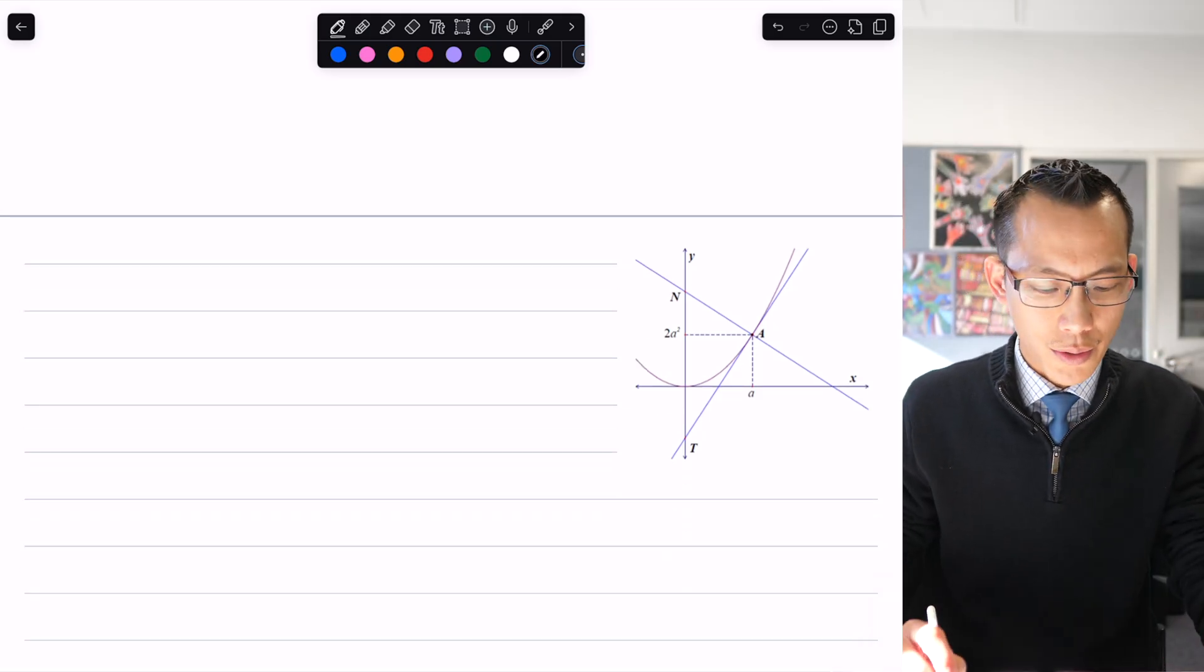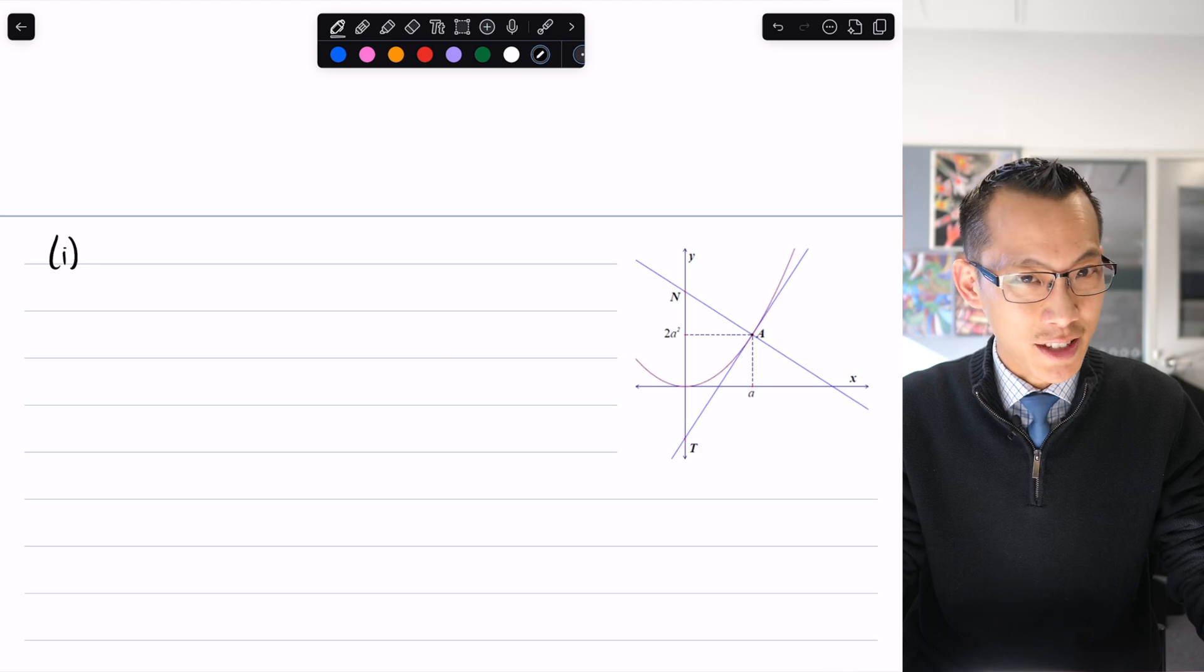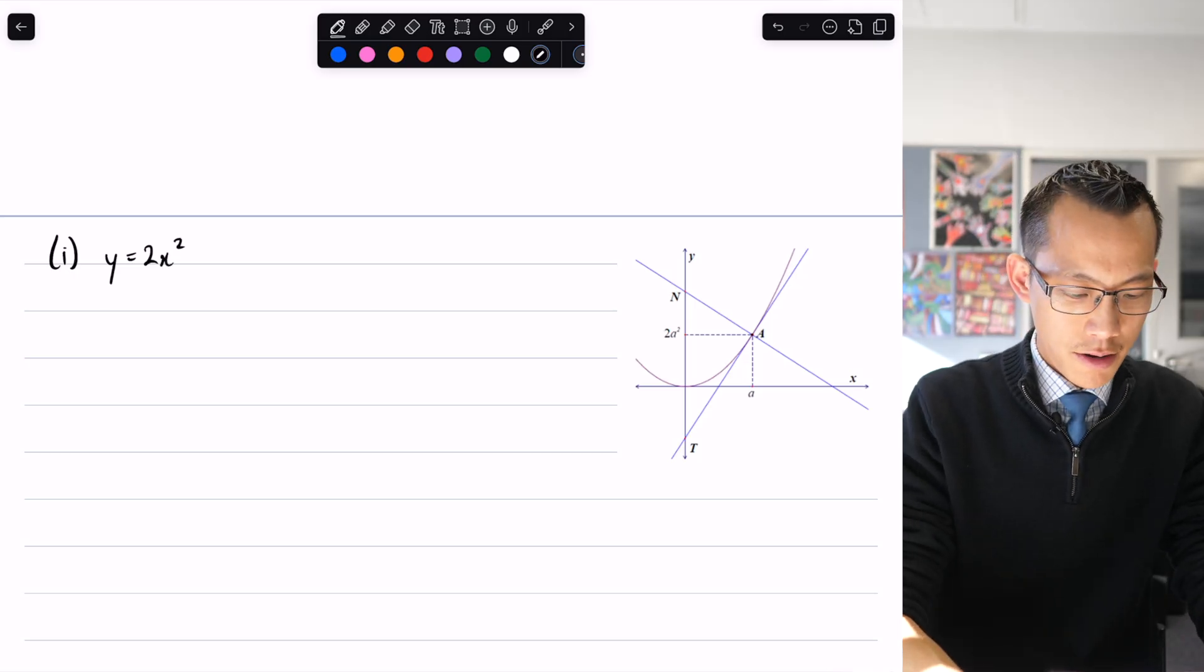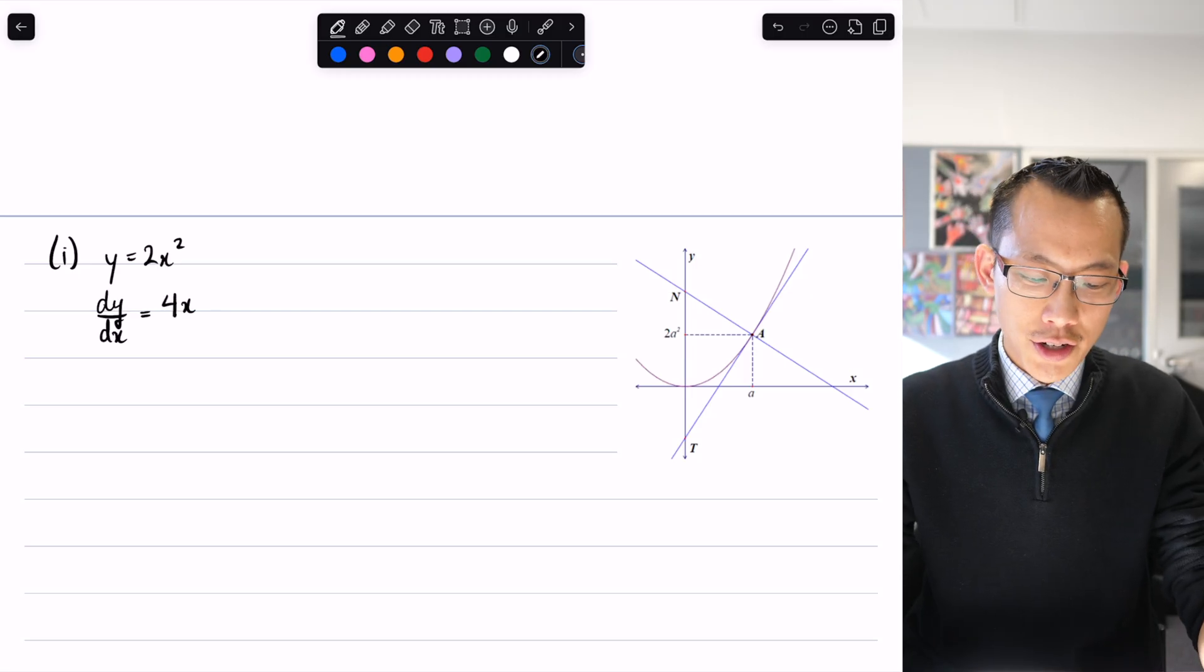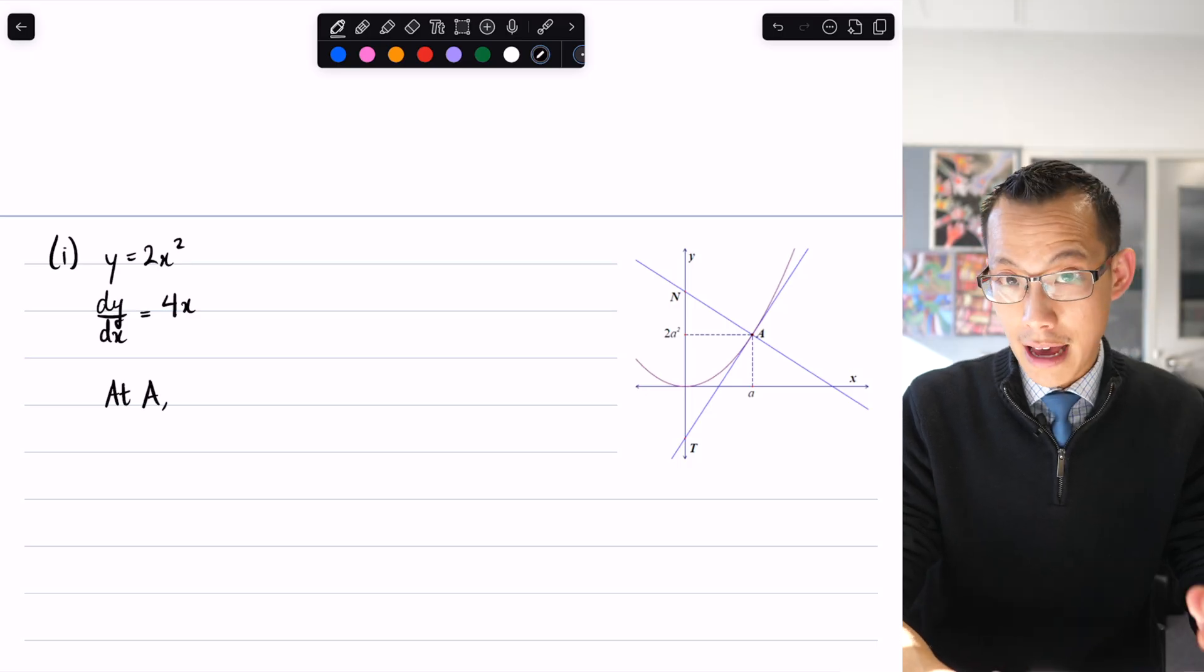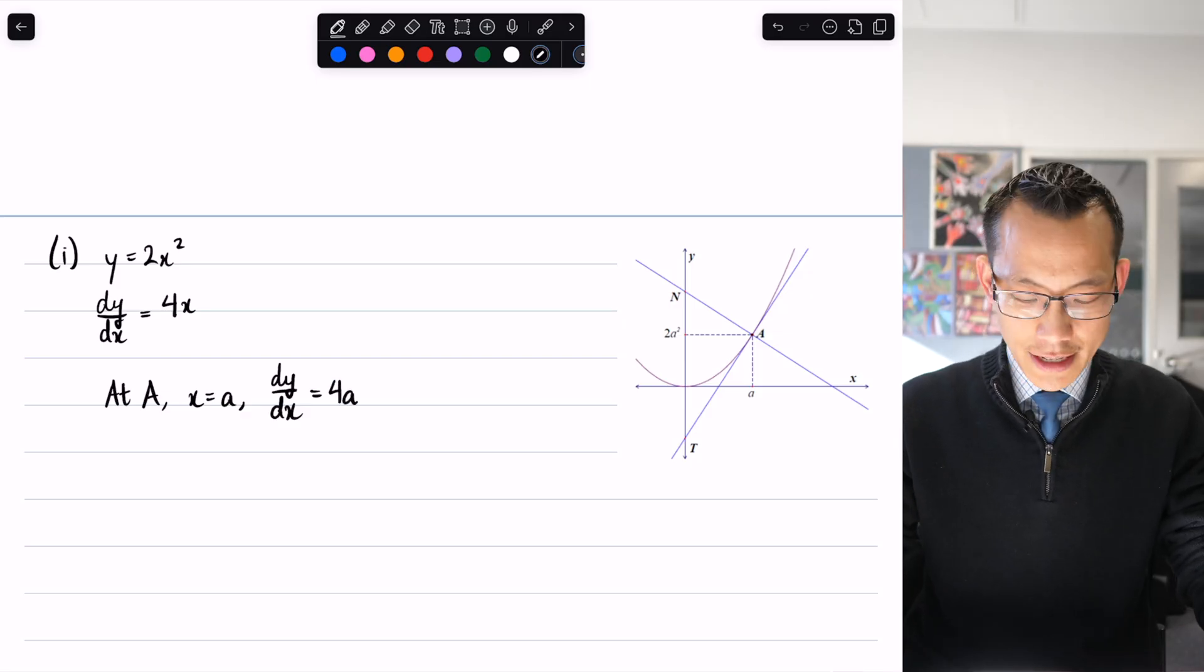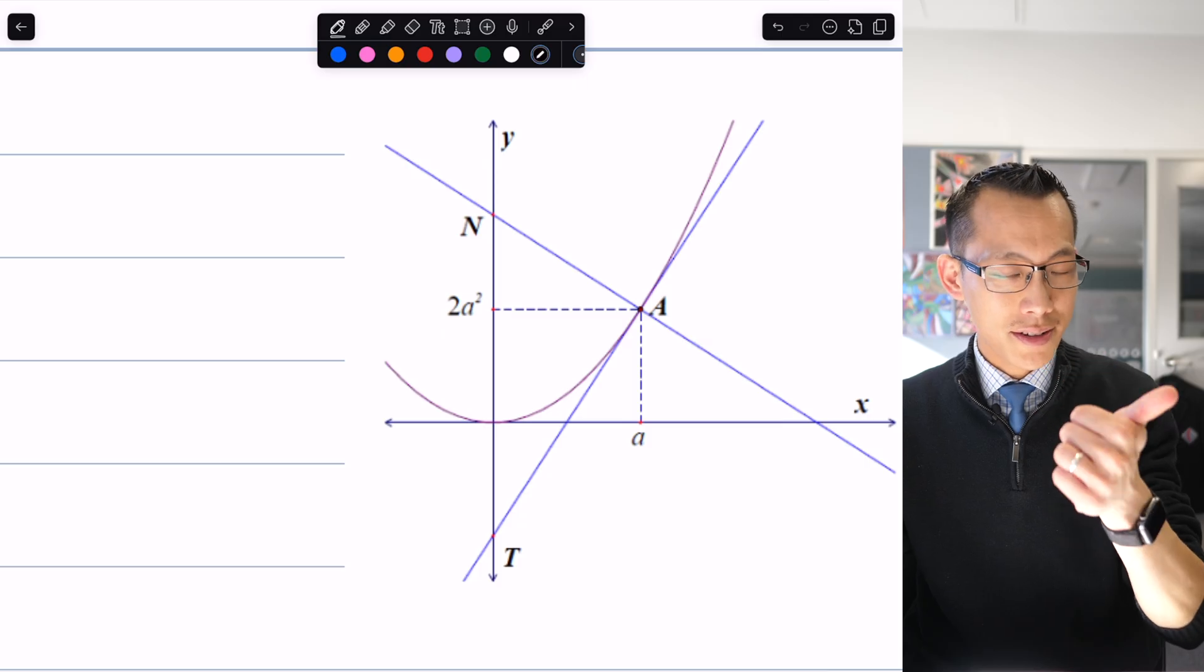It's important to think through your plan of attack. To find the equation of that tangent, I need its gradient and a point it goes through. We know the tangent goes through A. If y = 2x², the derivative dy/dx = 4x. At point A where x = a, dy/dx = 4a, so I've got a gradient.